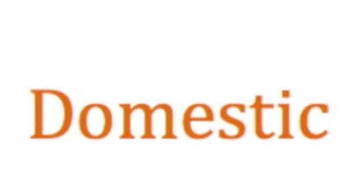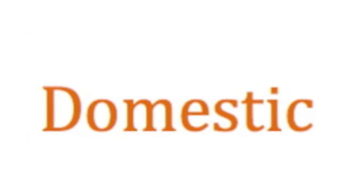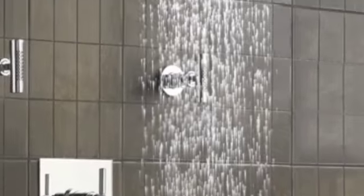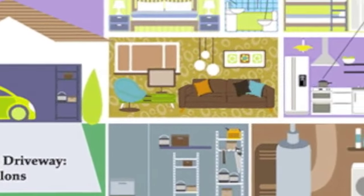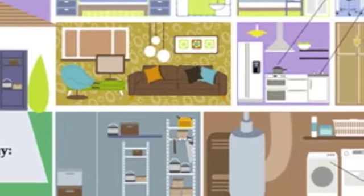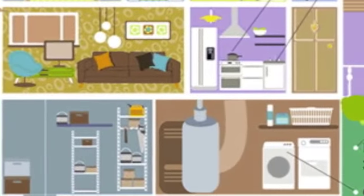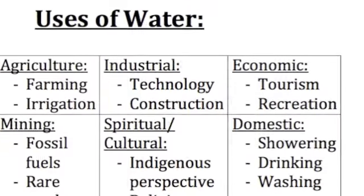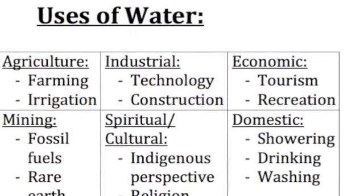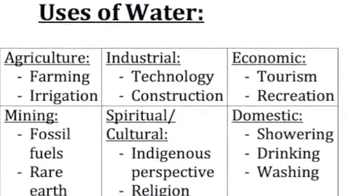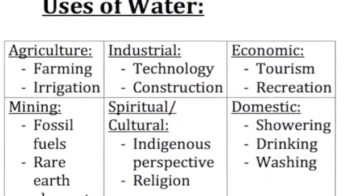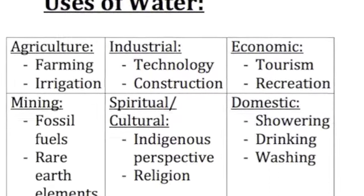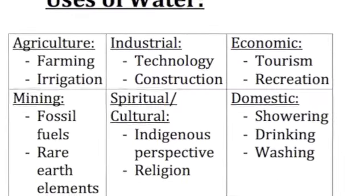And lastly, there's domestic use. That's where you come in — with your drinking water, showering, going to the toilet and other aspects of everyday human life. So those are the six key areas in life where we use water. If you pause the video now, the table can be copied into your work page.